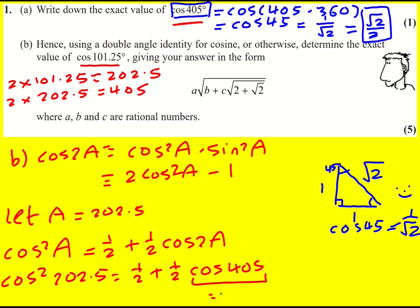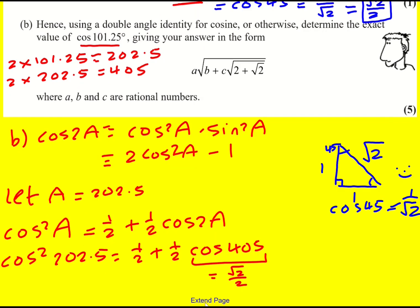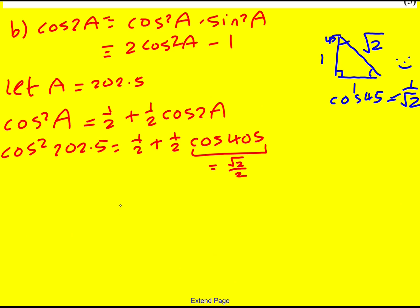And this here, as we had before, is root 2 over 2. So I'm going to factorize out the half. It's going to be 1 plus root 2 over 2. Put it over a common denominator of 2 over 2, factorize that out. So actually I'm going to get 2 plus root 2 over 4, the cos² of 202.5°.